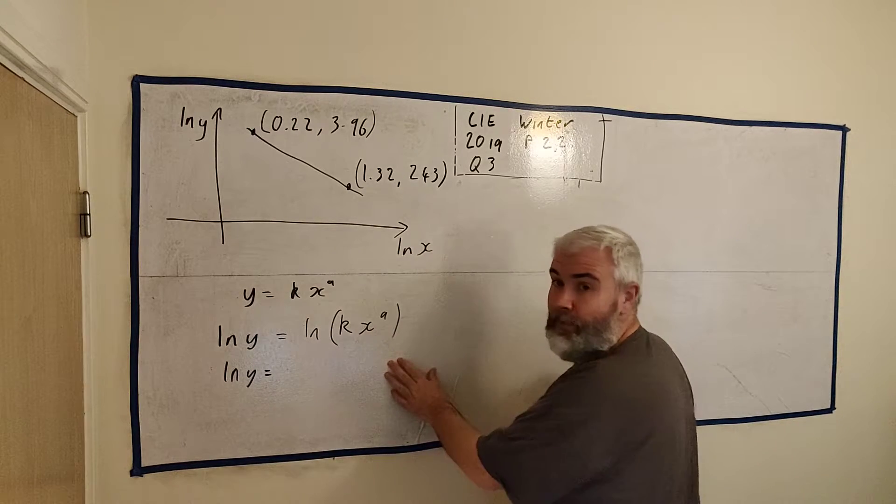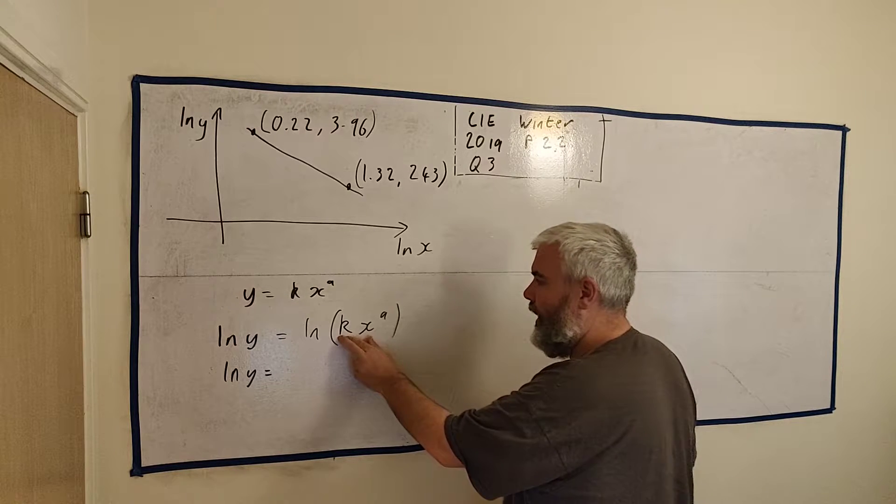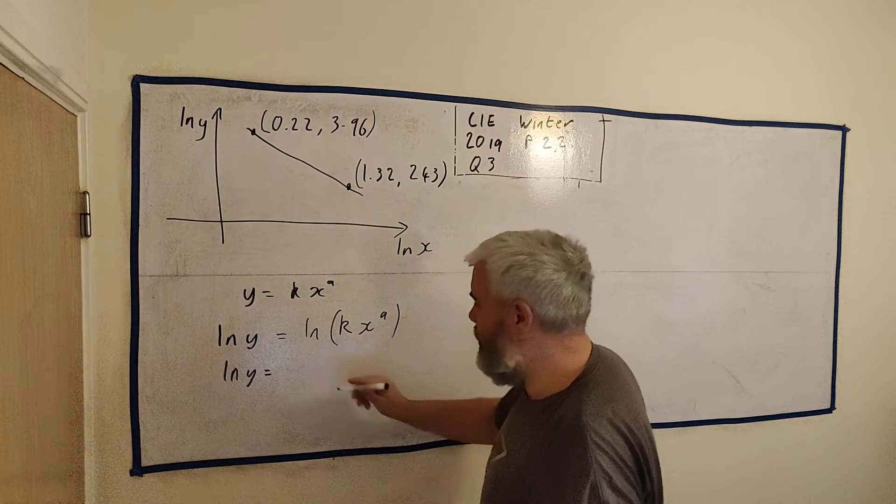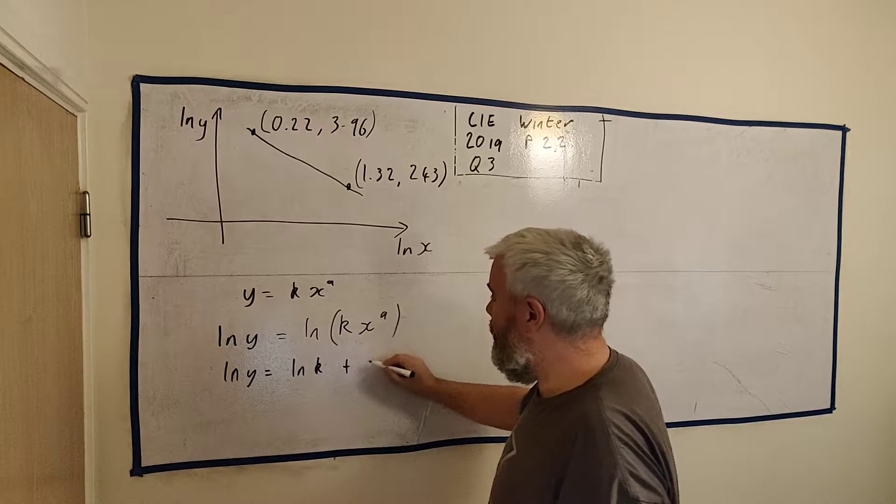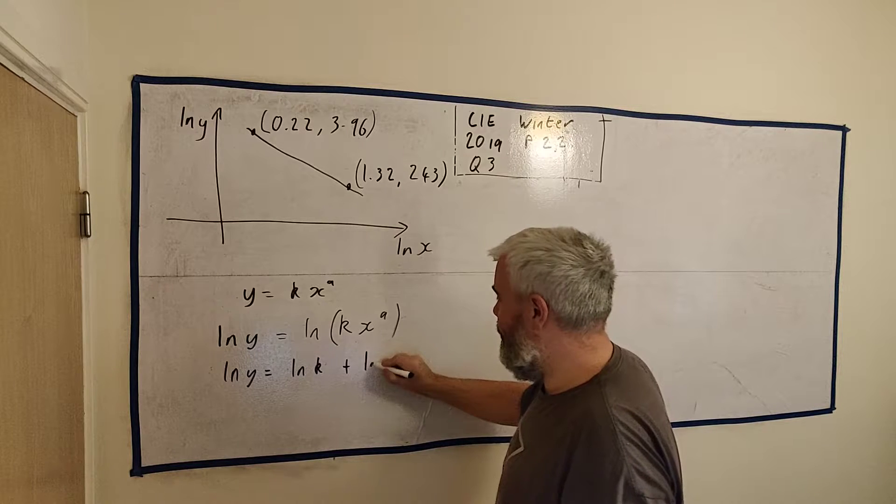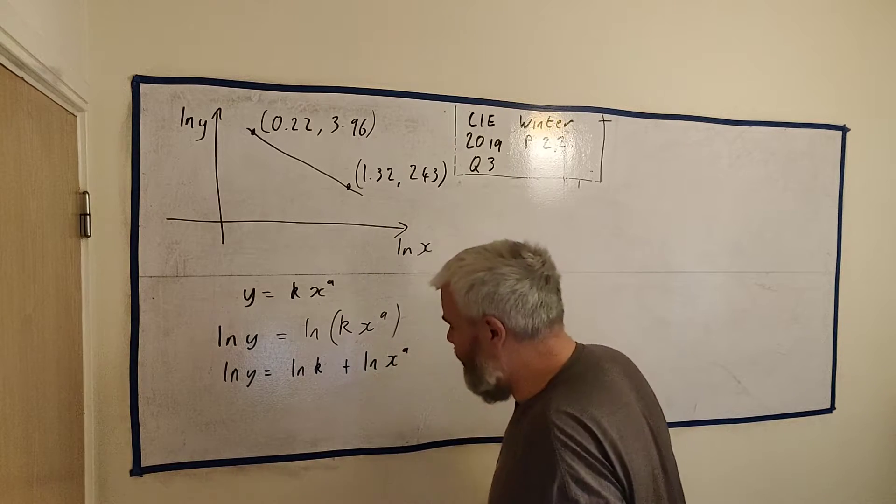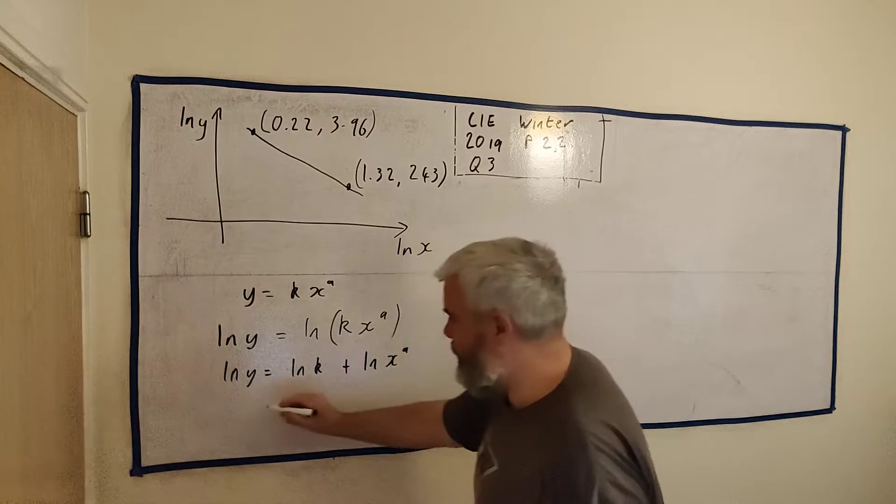And this, we have two things being multiplied, two terms, k and x to the power of a. So when two things are multiplied inside a log, that is the same as the two logs added together, natural log k plus natural log of x to the power of a.